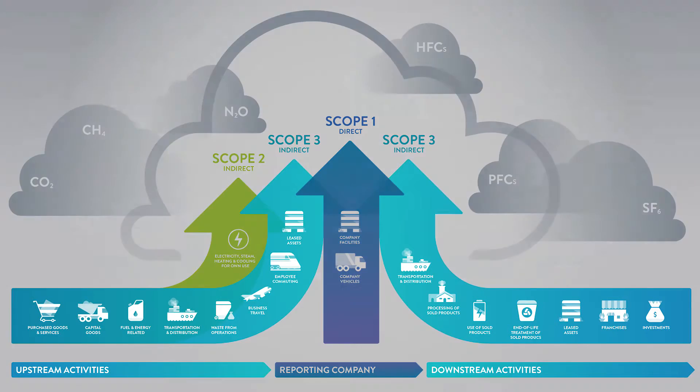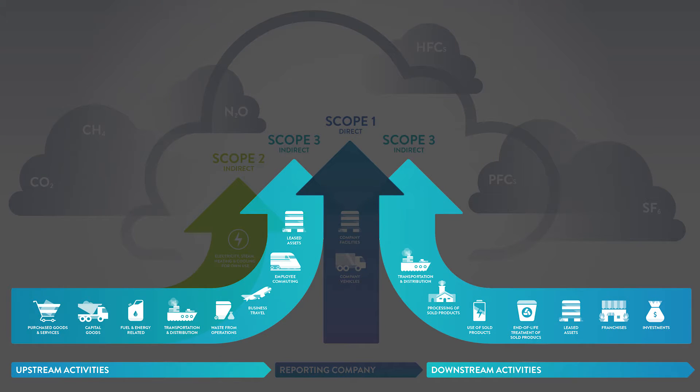Scope 3 emissions can be broken down into two groups: those arising from upstream activities and those from downstream activities. To help conceptualize this, let's imagine the upstream and downstream emissions of a cookie company.